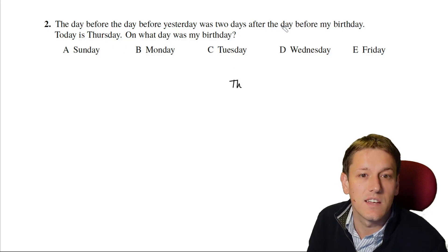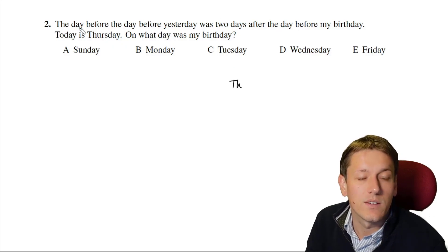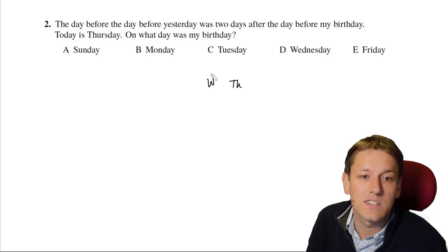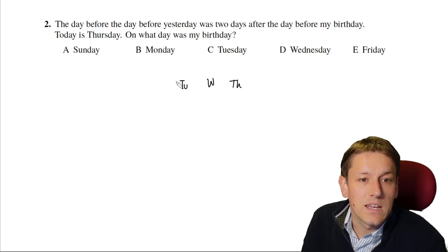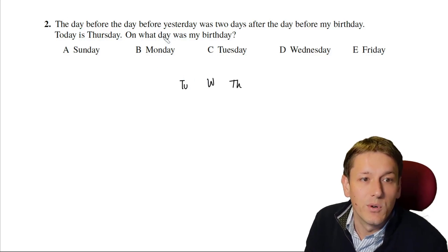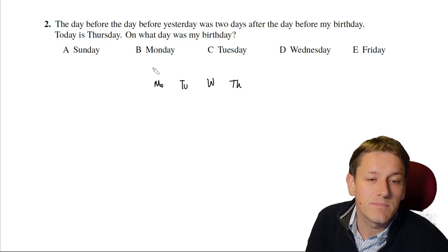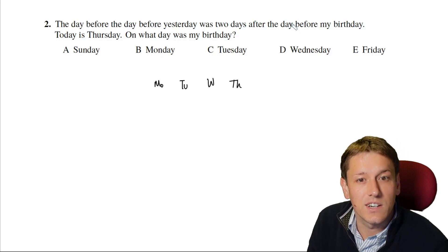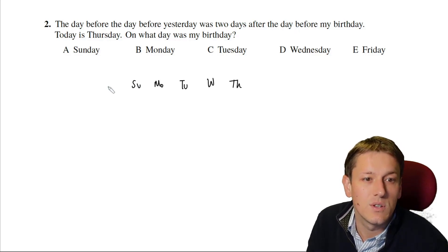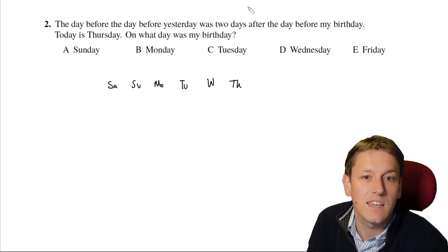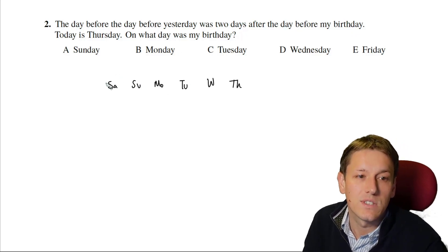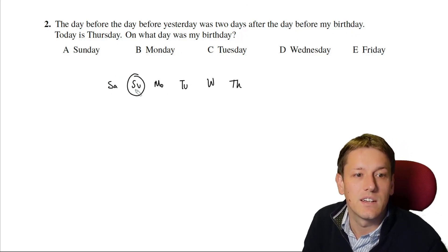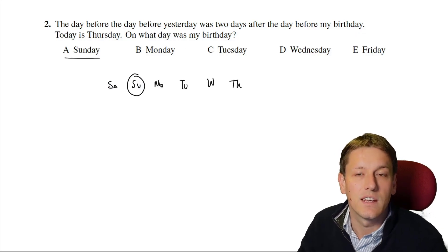I think here I would just start writing out a little calendar. So if today is Thursday, then we're going to be looking at the day before the day before yesterday. So that's going to be a Tuesday. So the day before yesterday is going to be a Tuesday. So the day before the day before yesterday is going to be a Monday. And that's two days after Saturday. And that's the day before my birthday. So Saturday is the day before my birthday. And so my birthday must be on a Sunday. And the answer is A.